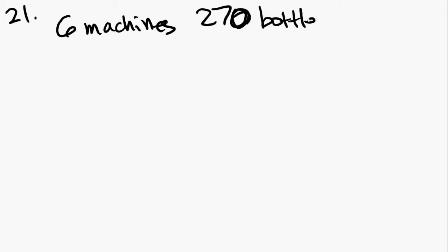Question number 21 says, running on the same constant rate, six identical machines can produce a total of 270 bottles per minute. And the question is asking, at this rate,